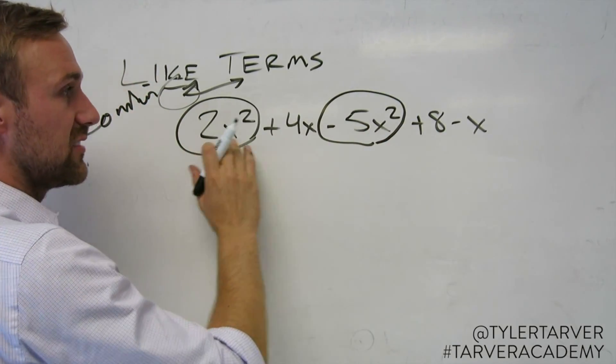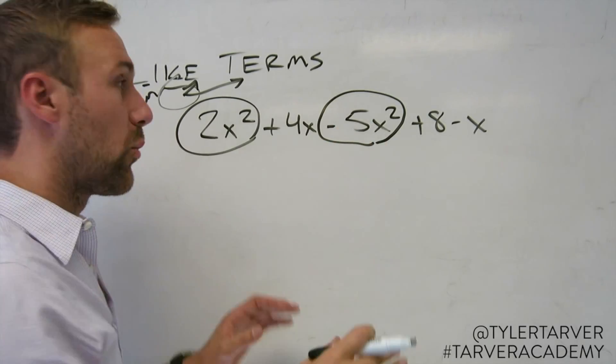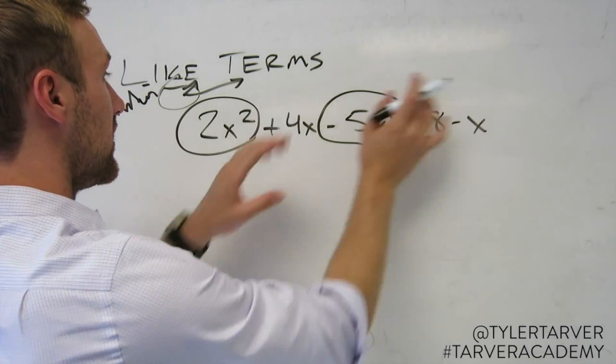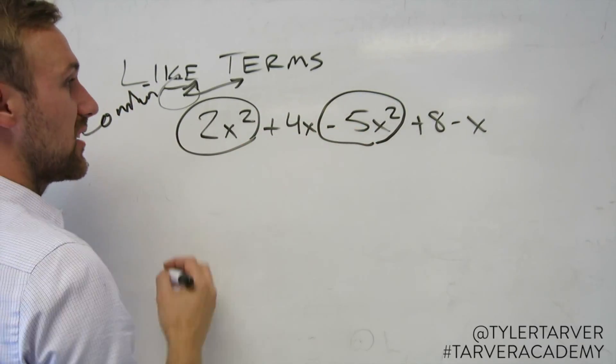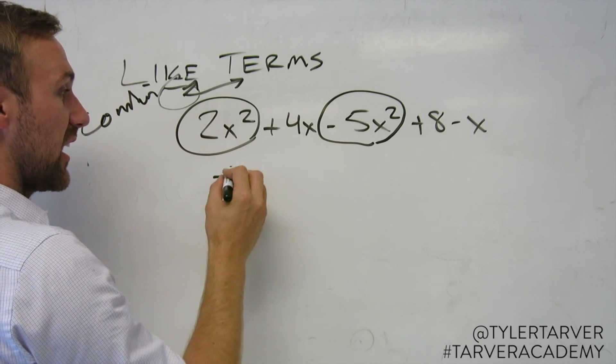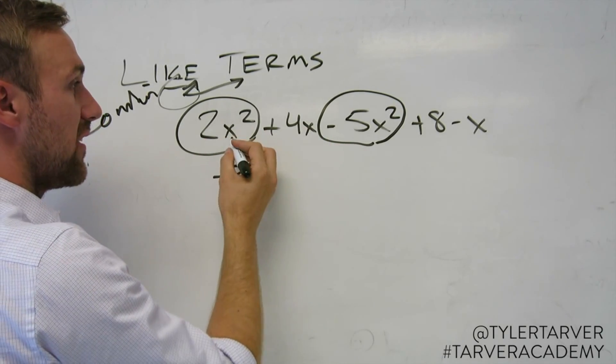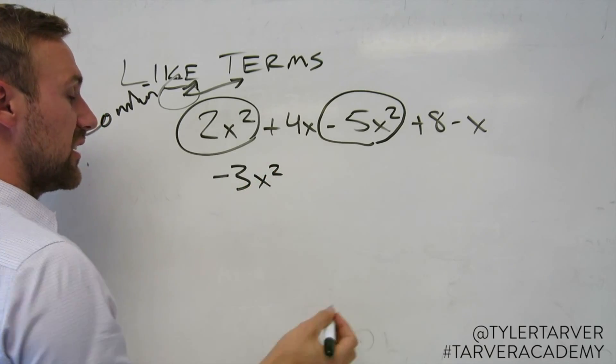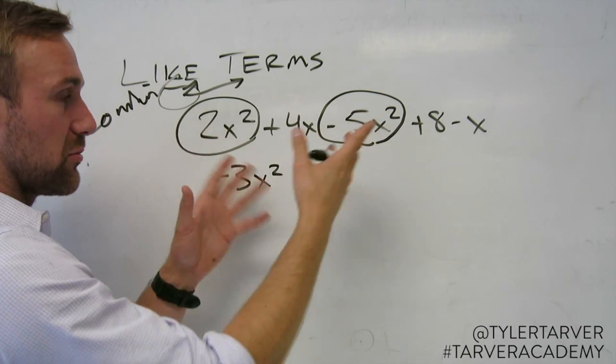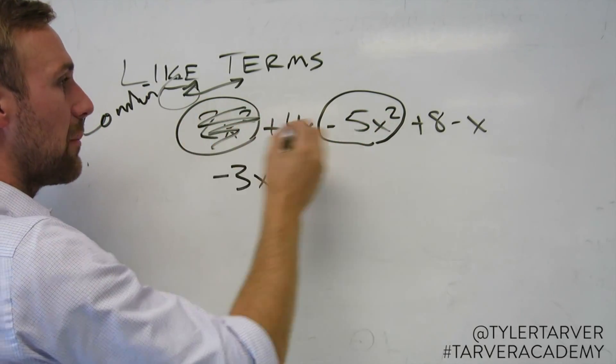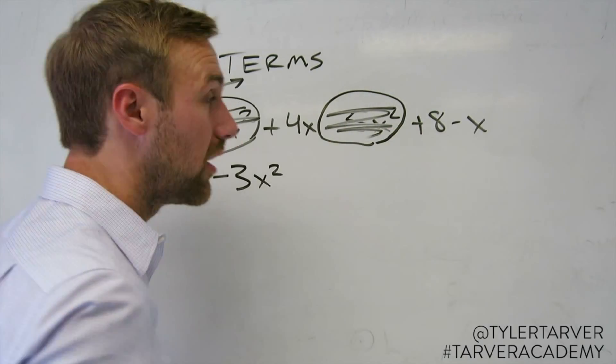So what I'm going to do is I'm going to take this and this and I'm working a regular problem ignoring these. 2x squared minus 5x squared is negative 3x squared, which you do 2 minus 5, which would be negative 3, and then the x squared stays as is. We don't delete them or subtract them because of that. And then I mark these out.